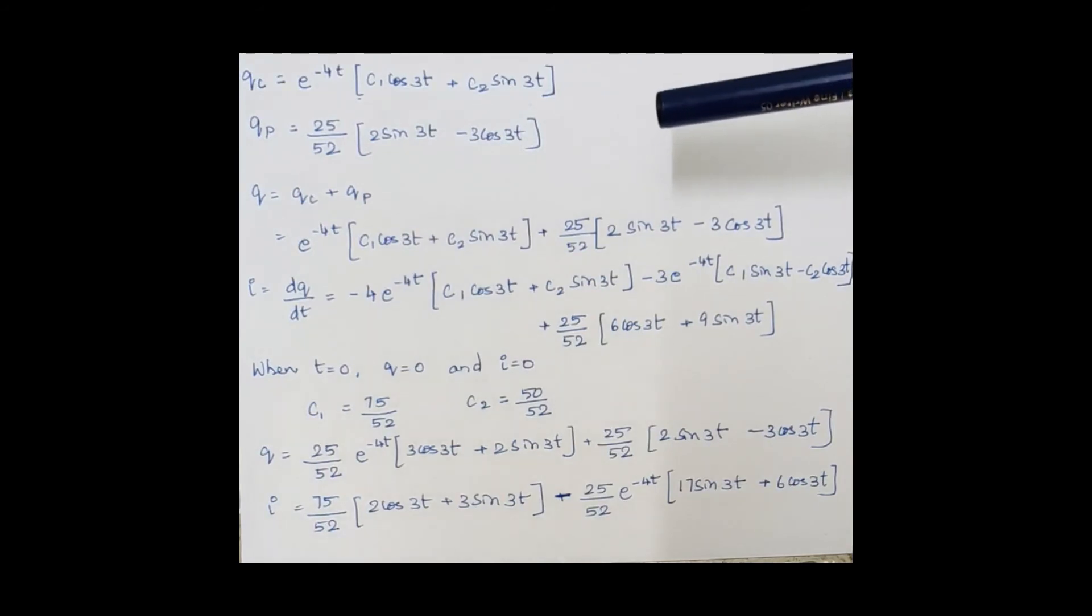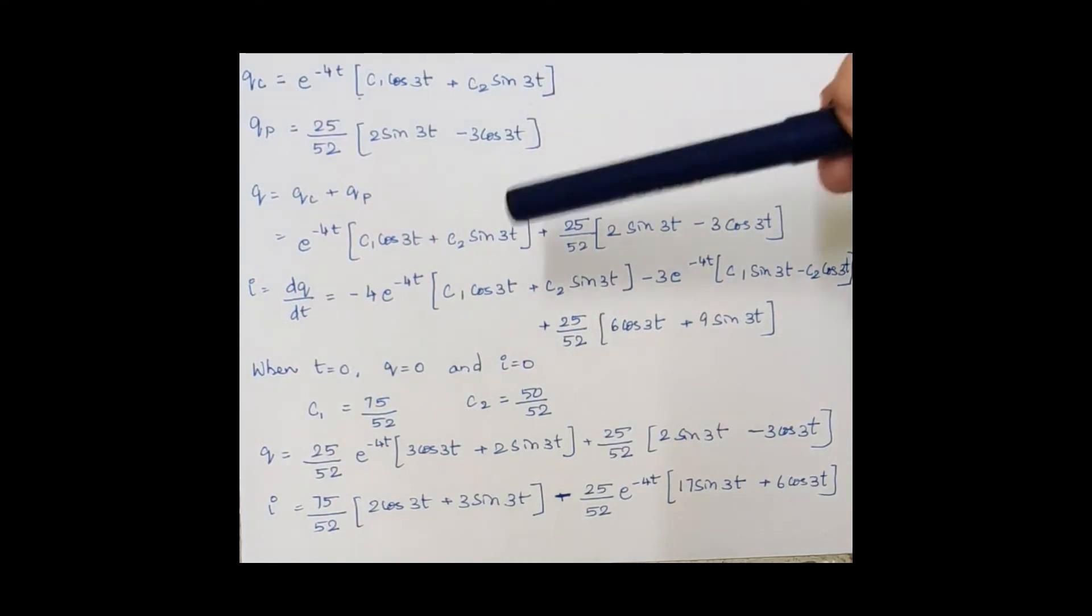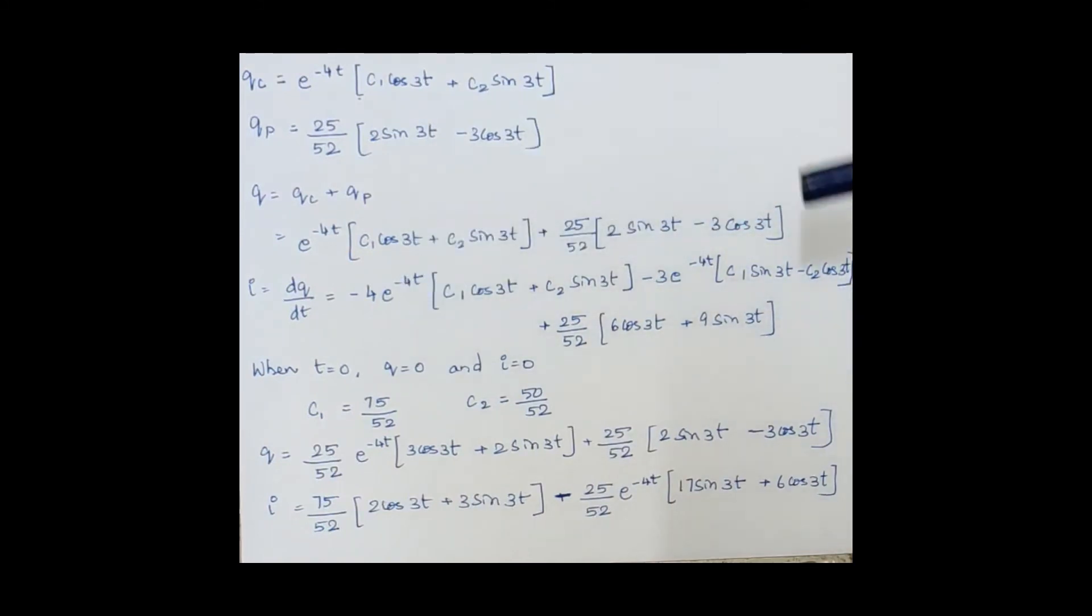We have two methods: variation of parameters method and undetermined coefficients method. From there, we obtain this as a particular integral. We know that the sum of complementary function and particular integral is the solution, so we add them up.